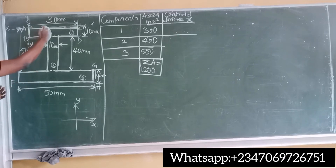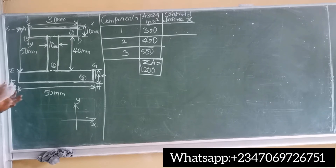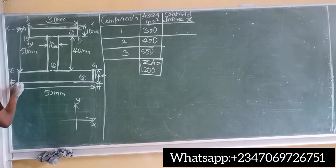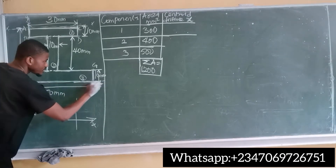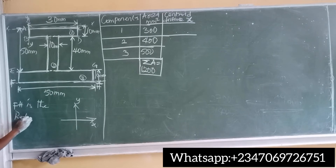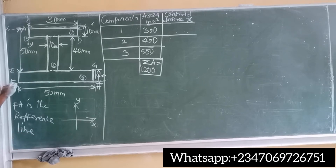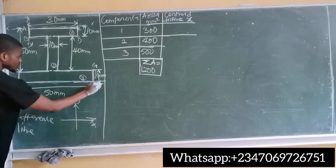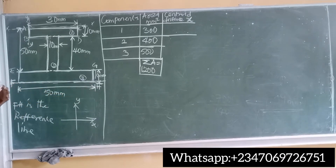With three sections, the reference point is the very last line that makes up the composite shape. That is line FH, which runs along the bottom edge. Everything we calculate must come down to reference line FH.